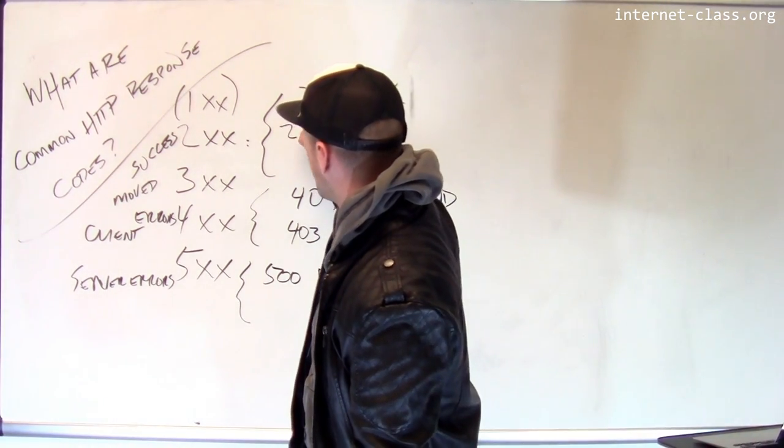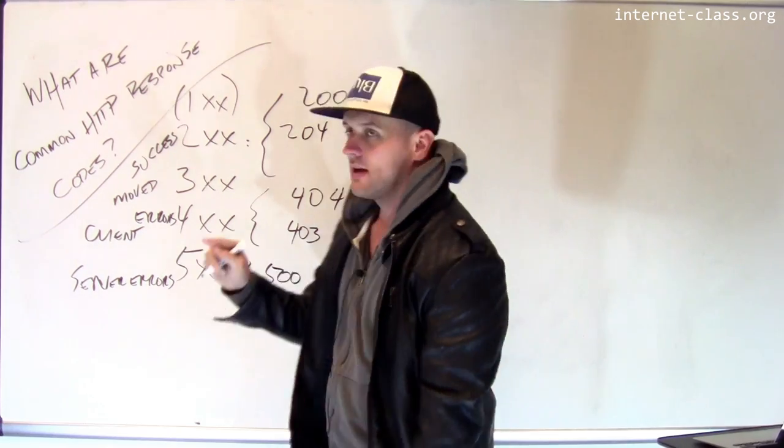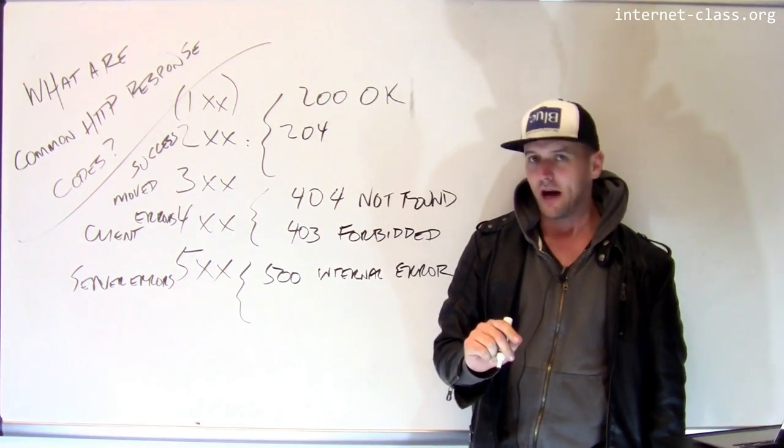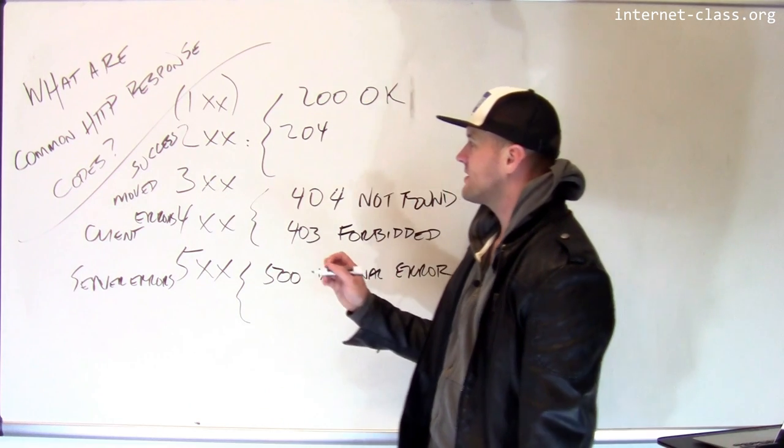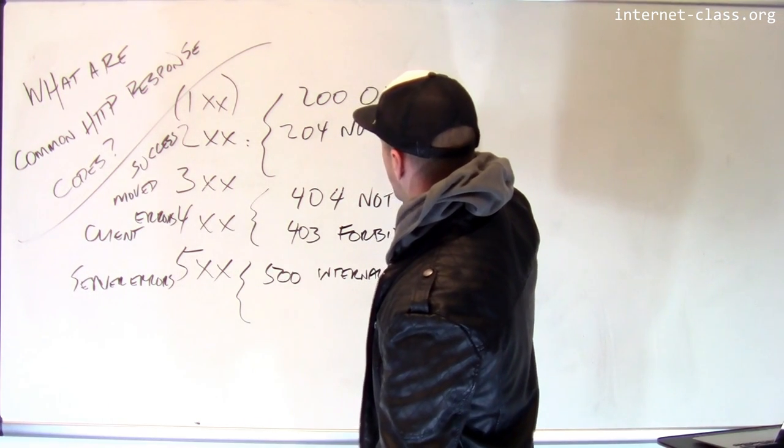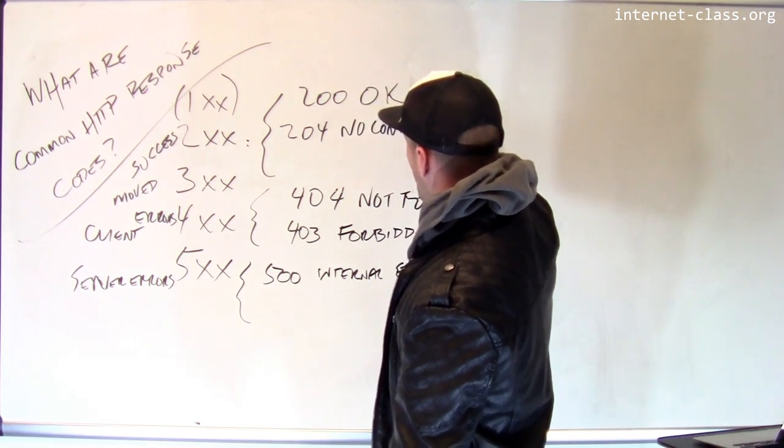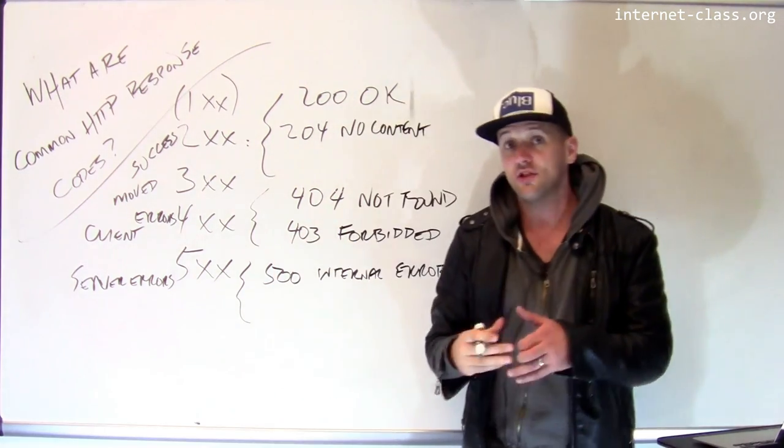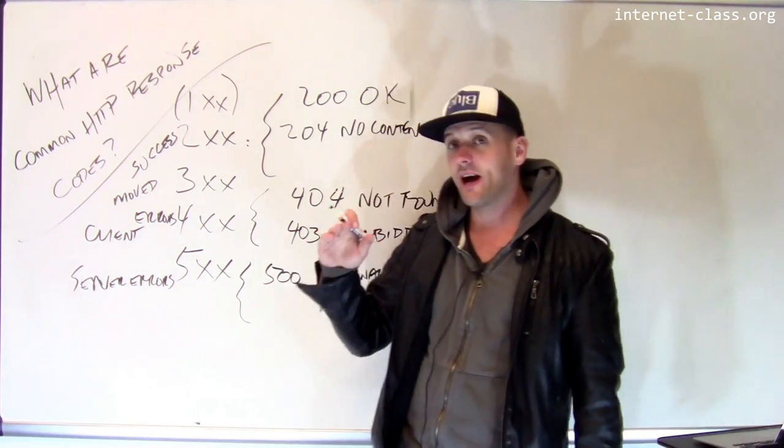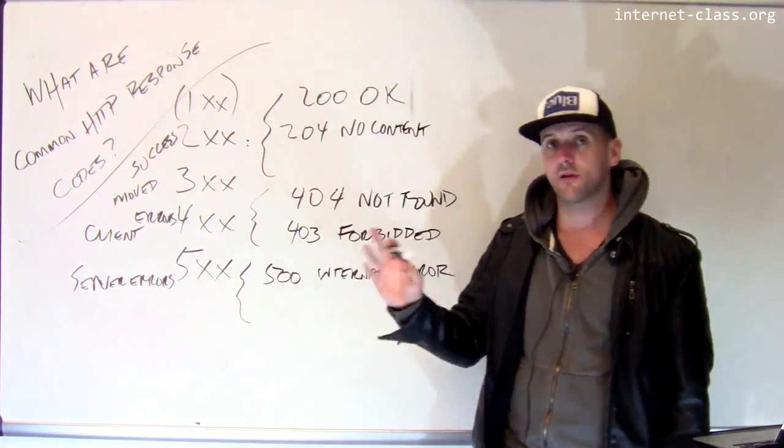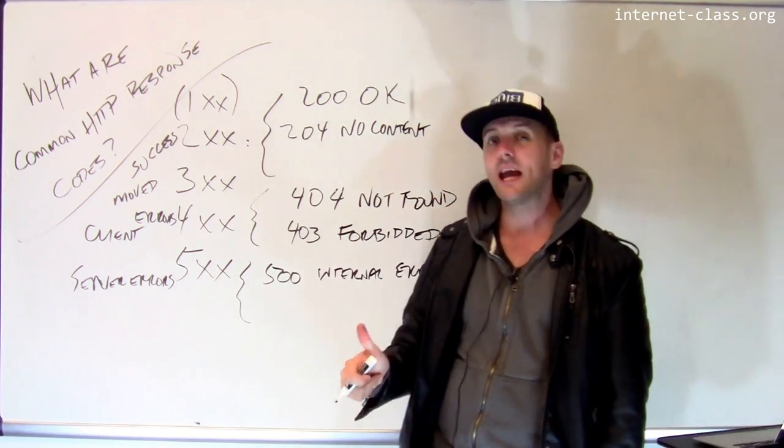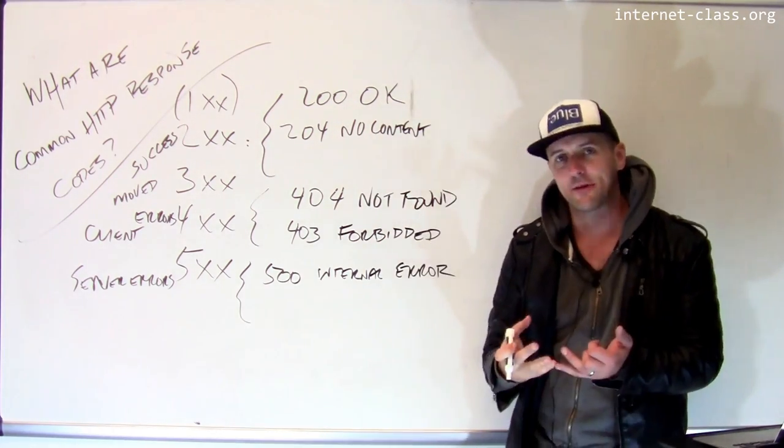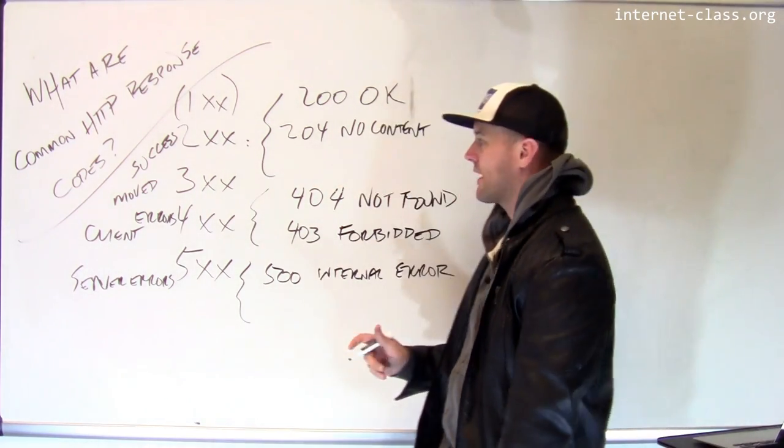Okay. So a 204 is interesting. A 204 means that the server processed the request properly, but it's not returning you any information. And you might wonder, why is this okay? It's okay because remember that the client can also send what's called a head response, and the head is just asking for the headers. So the right code to return for a header response might be 204 because it means, got it, that page exists, but you didn't ask me for the page. So I'm not sending you back any content. I'm just sending the headers.